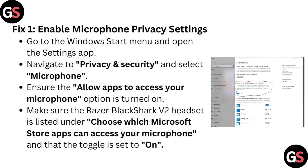Step 1: Enable microphone privacy settings. Go to the Windows Start menu and open the Settings app. Navigate to Privacy and Security and select Microphone. Ensure the 'Allow apps to access your microphone' option is turned on. Make sure the Razer BlackShark V2 headset is listed under 'Choose which apps can access your microphone' and that the toggle is set to on.